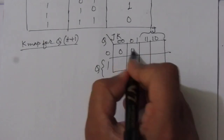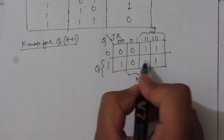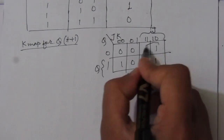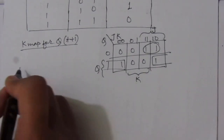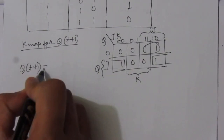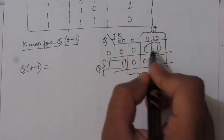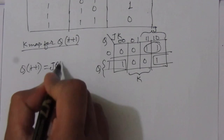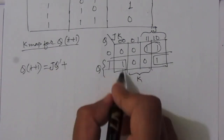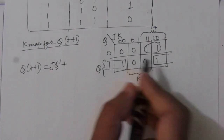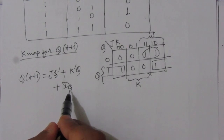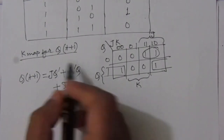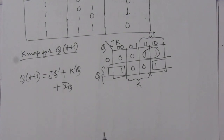From the Karnaugh map groupings we get: Q(t+1) = J·Q̄ + K̄·Q. We are adding a D flip-flop to provide the clock. The D flip-flop gives the output whatever it gets at the input.